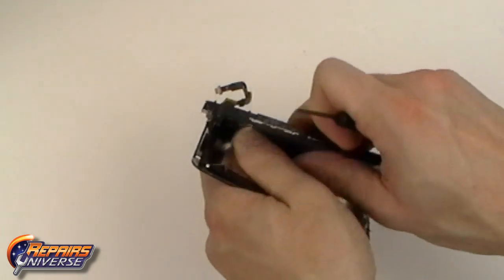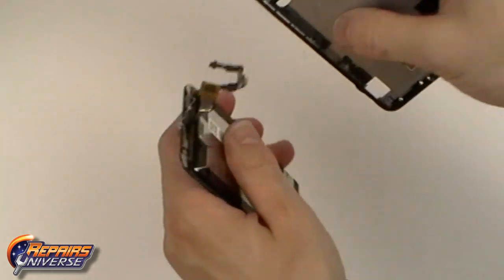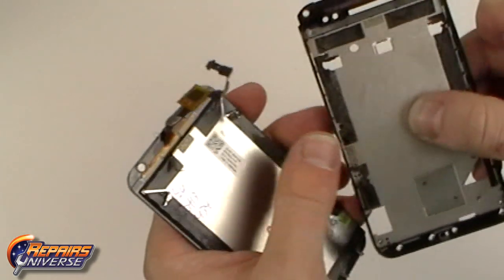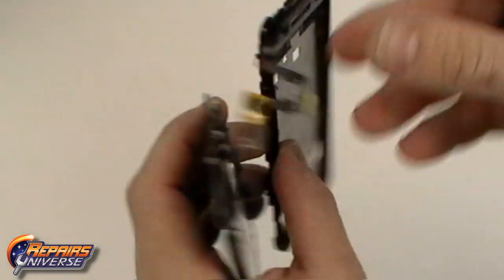We can now separate the screen assembly from the housing. Be careful of the touchscreen flex cable as it's fed through the slot in the housing.